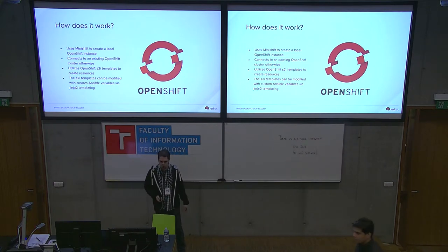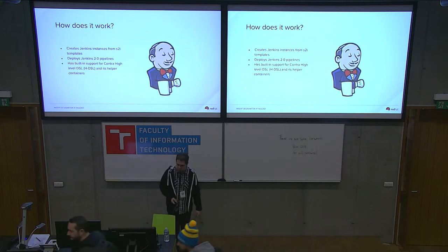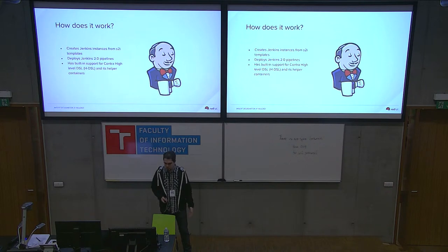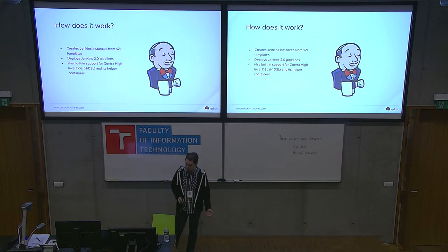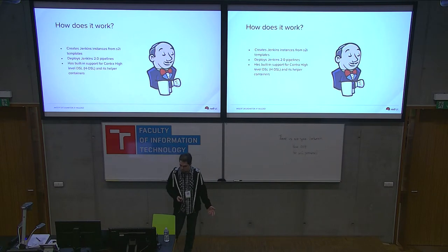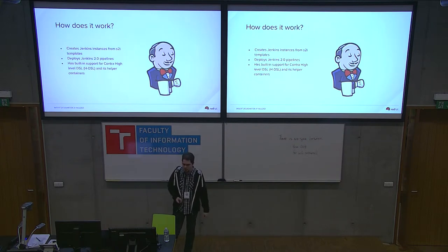There's no need for duplication. The final product in our general usage is to create a Jenkins instance from those S2I templates. That's not a must — pretty much nothing else is — but it's general usage and it tends to work that way. So we are able to deploy Jenkins 2.0 pipelines from code, which can be used in every way you choose. We support the Contra high-level DSL templates, which are pretty much very easy to configure YAML files, as already mentioned.